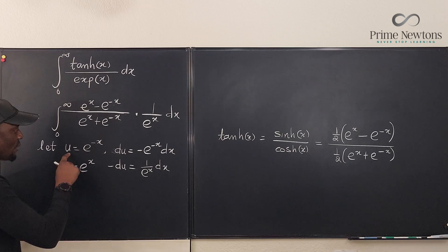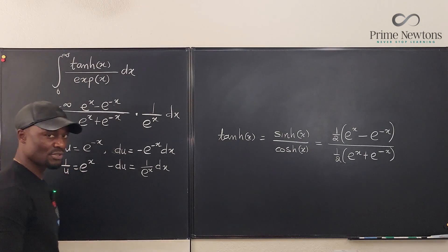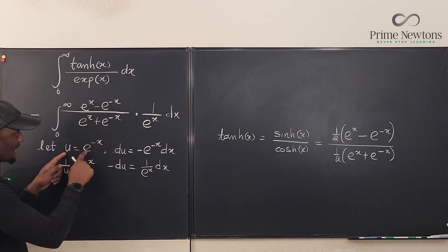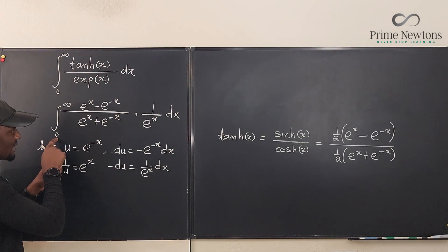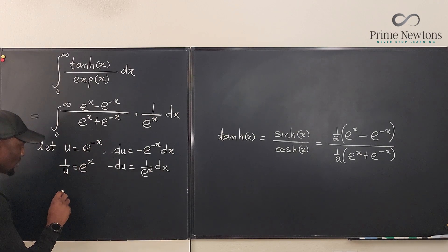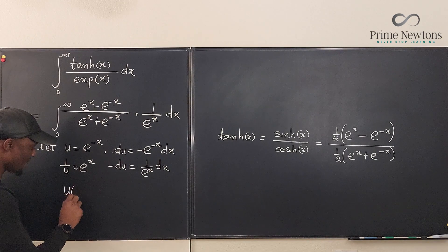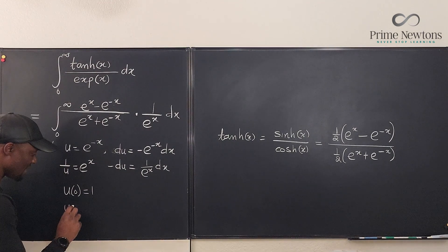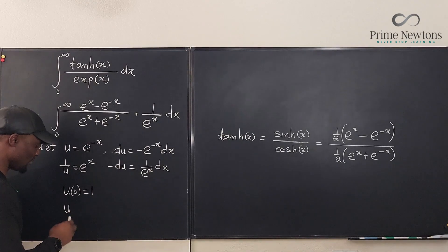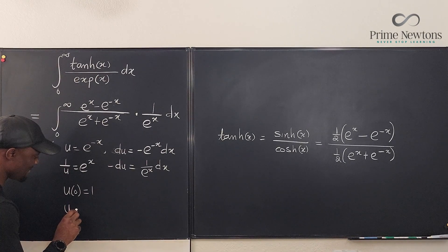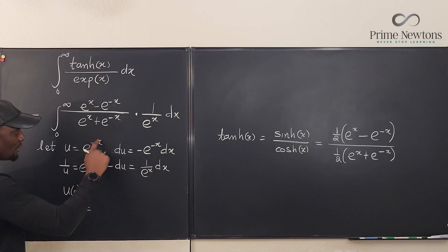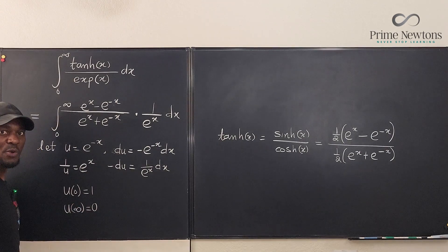So I can go here and replace this guy with negative du. And because I said u equals e to the negative x, I can actually say that one over u is equal to e to the x. So if I go back and plant all the things I've done, we have to change all of these boundaries. So since we said u is e to the negative x, when x is zero, what would this become? One. So we're going to have u is equal to one. And u evaluated at infinity is going to be zero actually. Let's get rid of this.